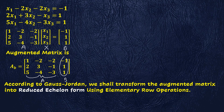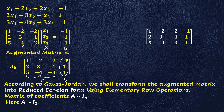According to the Gauss-Jordan method, we shall transform the augmented matrix into reduced echelon form using elementary row operations. In this case we shall reduce the matrix of coefficients A to the identity matrix. Since we have three equations in three variables, we transform the matrix of coefficients A to I3, the identity matrix of order 3.